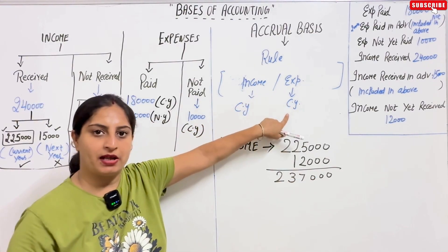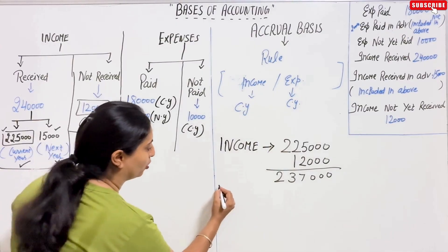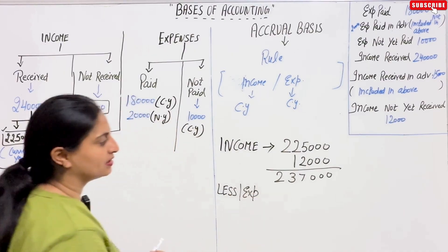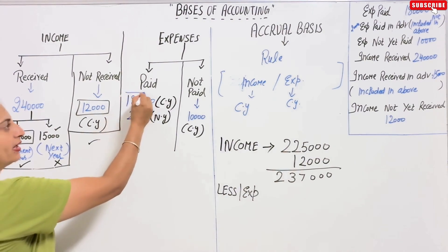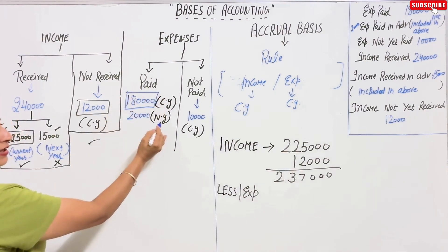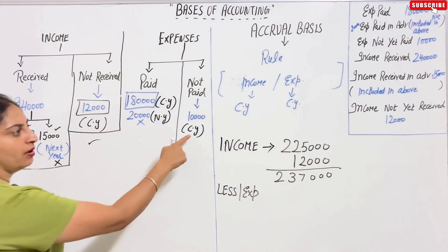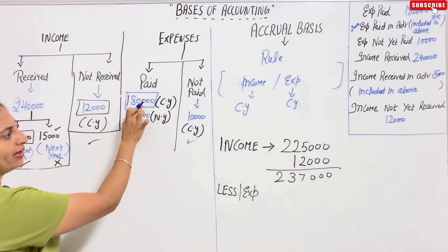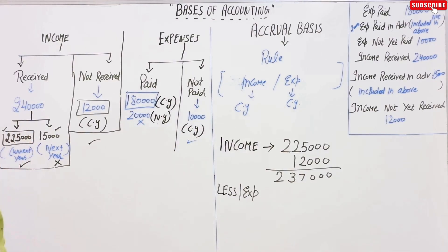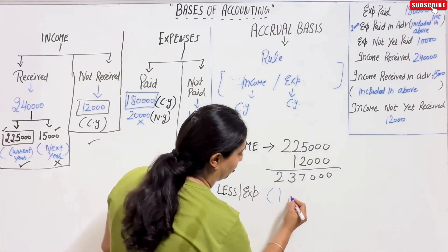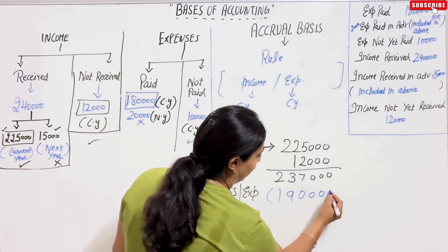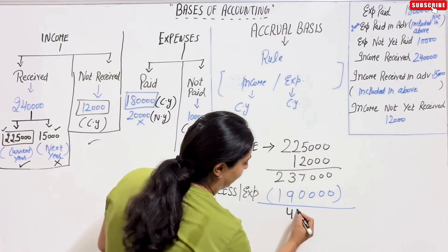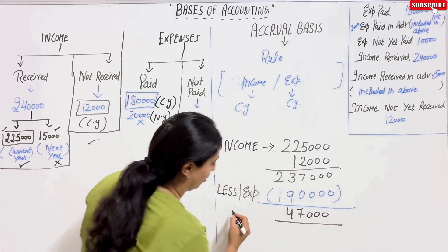Now, less expenses where current year is written. The twenty thousand is NY — next year — so we skip it. We take one lakh eighty thousand (paid, current year) and ten thousand (not yet paid, current year). Total expenses: one lakh ninety thousand. So net income on accrual basis: income minus expenses gives forty-seven thousand.